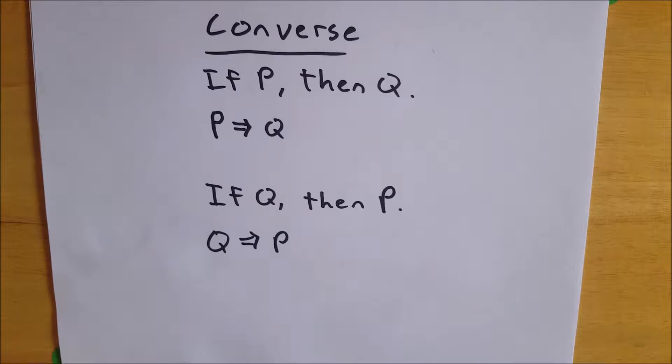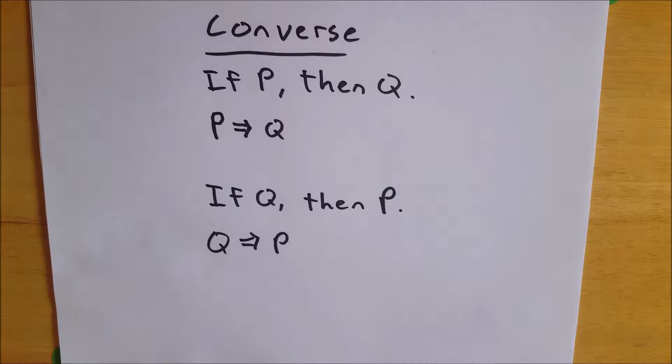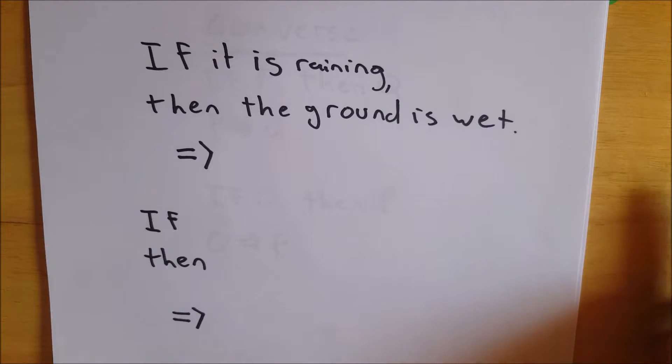So for some of you, that might be enough. If any of you want to see an example, stick around, and we'll go over a couple right now. So first, consider this statement: if it is raining, then the ground is wet, and we want to find the converse of this statement.